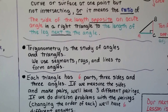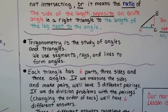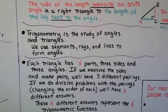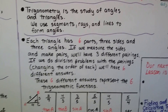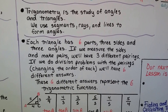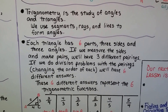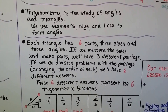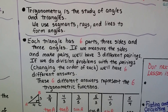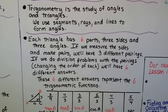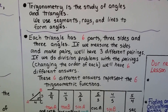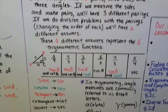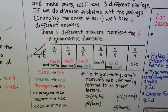Trigonometry is the study of angles and triangles. We use segments, rays, and lines to form angles. Each triangle has six parts: three sides and three angles. If we measure the sides and make pairs, we'll have three different pairings. If we do division with the pairings, changing the order of each, we'll have six different answers. These six different answers represent the six trigonometric functions.